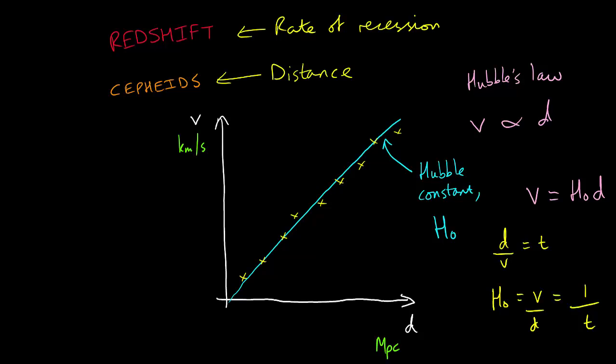This gives us a Hubble constant in kilometres per second per megaparsec. However, the SI units are, of course, metres per second and metres. So this would give us a Hubble constant with a unit of seconds to the minus one per second.